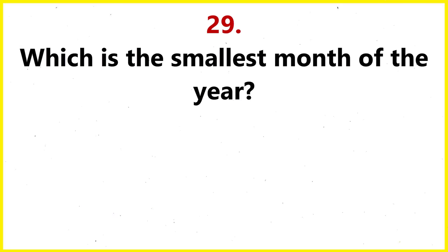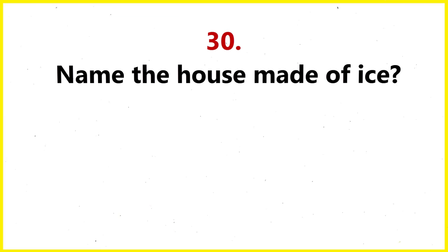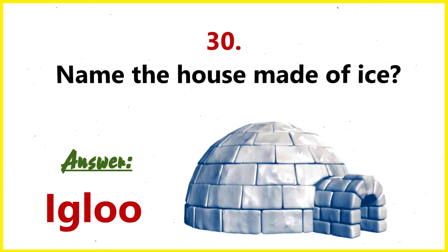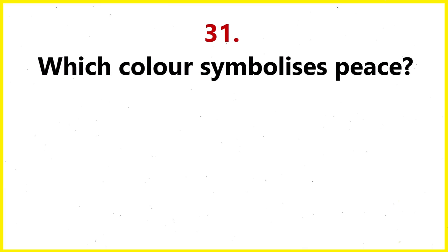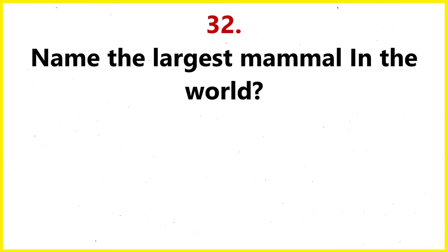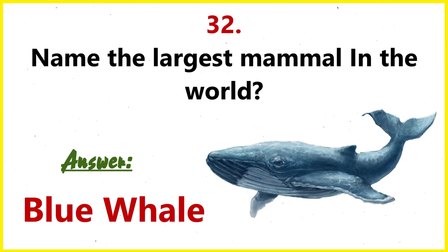Which is the smallest month of the year? February. Name the house made of ice. Igloo. Which color symbolizes peace? White. Name the largest mammal in the world. Blue whale.